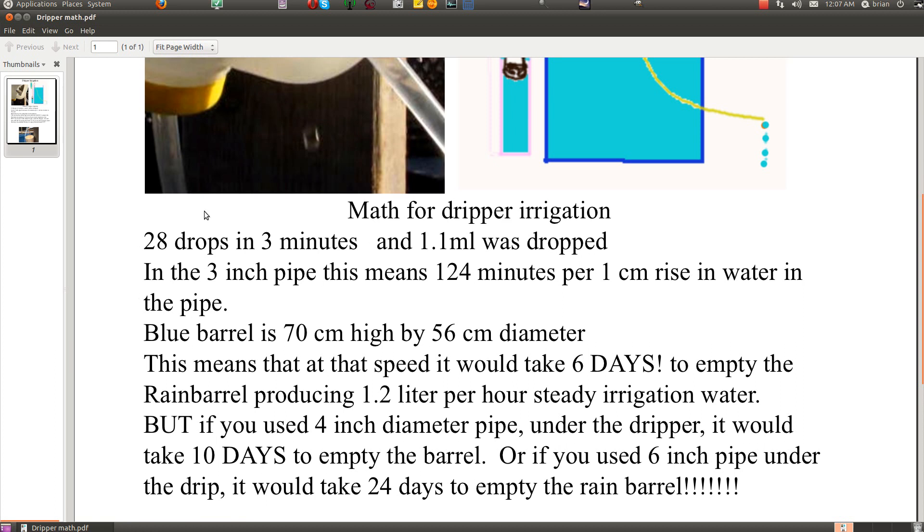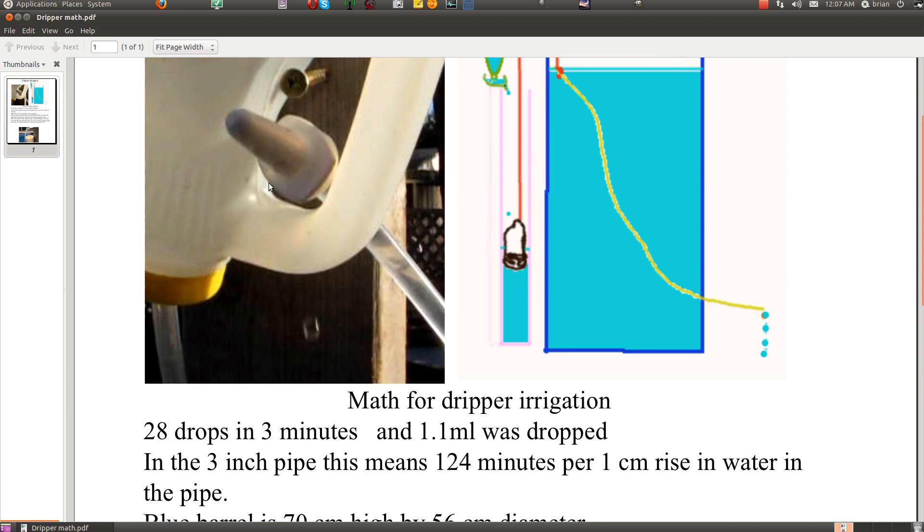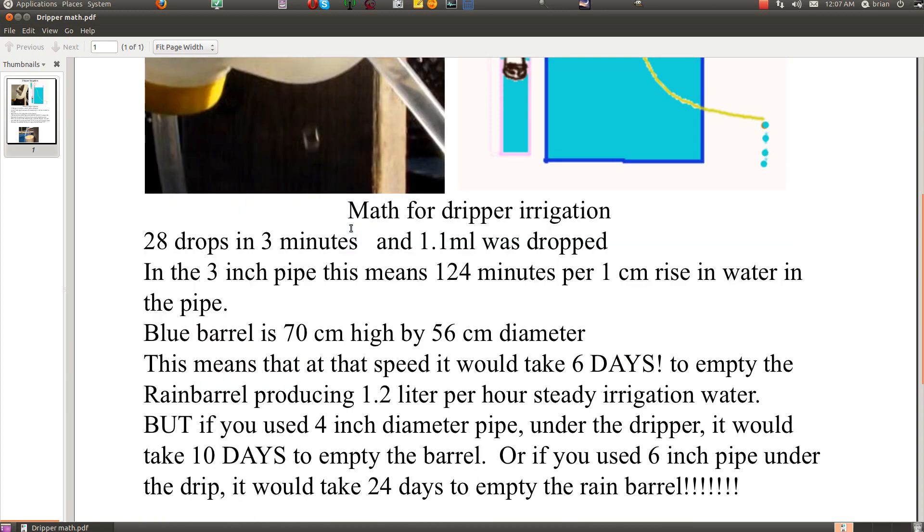So a couple of days ago I did a 3 minute test and there was 28 drops in 3 minutes, and 1.1 milliliters was dripped out in the 3 minutes. In the 3 inch diameter pipe, this means 124 minutes will rise the water level in it by 1 centimeter.